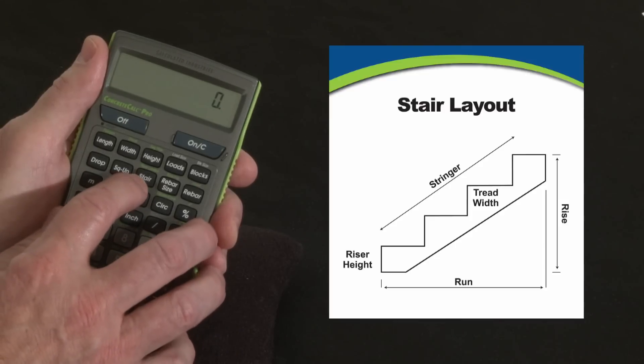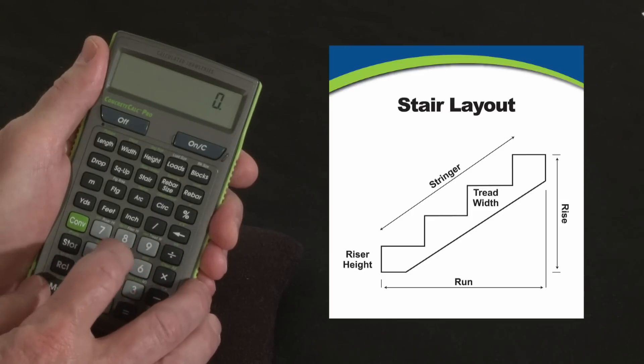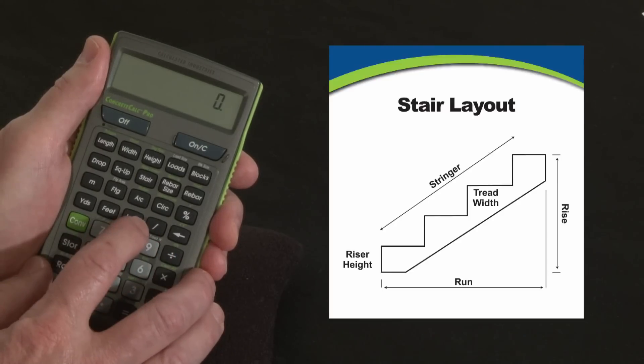First of all you need to understand that the target riser height in the stair function is seven and a half inches. Now you can override it and put in a five inch riser or an eight inch riser and that's fine, but for this example we're going to use a seven and a half inch target riser height.